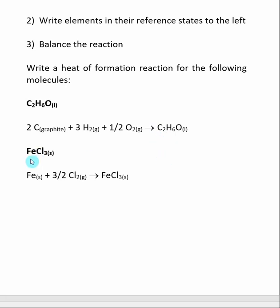If we do another one, FeCl3, same deal. You put the arrow. You put the molecule of interest to the right. You figure out what elements are in there. So in this case, iron and chlorine.